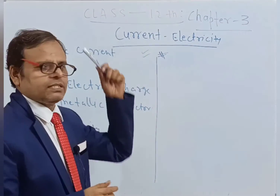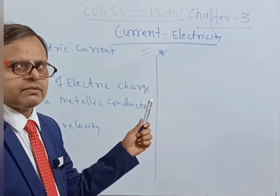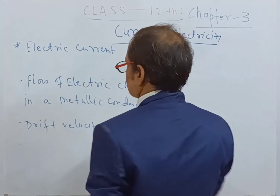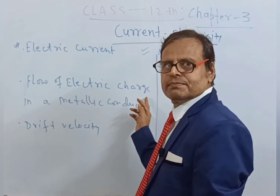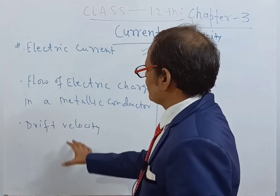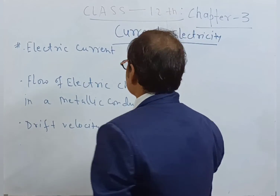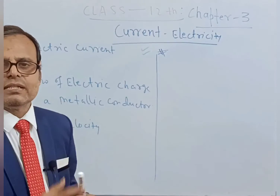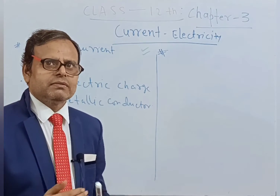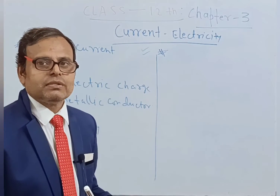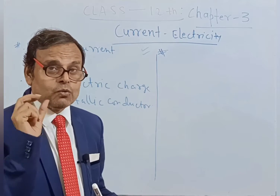That topic is Chapter 3: Current Electricity. In this chapter, the important topics are Electric Current, Flow of Electric Charge in a Metallic Conductor, and Drift Velocity. These three points I have written here as per the CBSE board syllabus, word for word. You can check in your latest syllabus.